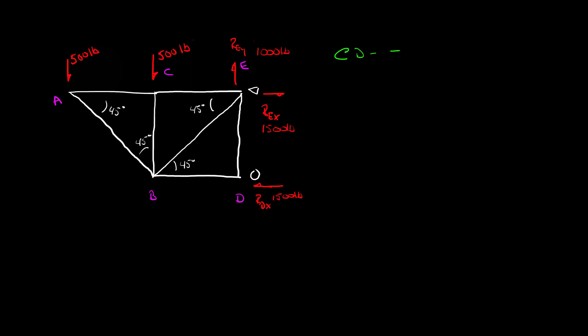At point D, the summation of the forces in the x direction have to equal zero, and the summation of the forces in the y direction have to equal zero. So let me do a free body diagram of point D. Here's point D, and I know that I have a reactionary force at D, RDX, which is 1,500 pounds, acting in. I also know that I have some other force coming from BD, so I'm going to draw that coming into it, and I know that I've got another force — I'm going to put that pulling away from it — and that's the vector that goes from D to E, which I'll call vector DE.